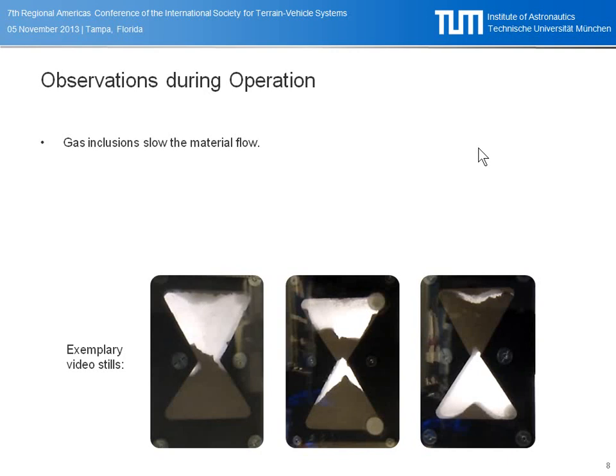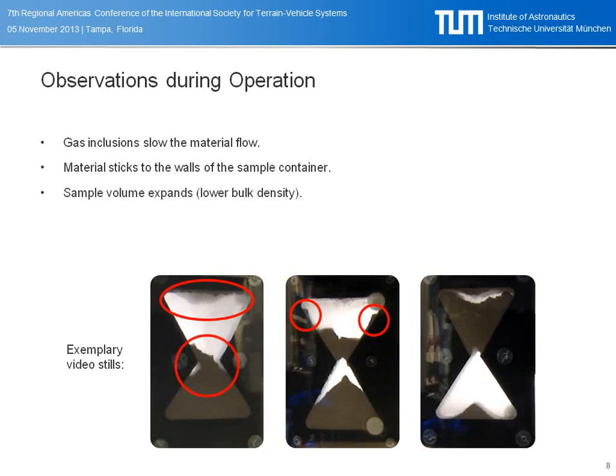Several observations we had during the flights: what we could see prior to flight in laboratory experiments was that if you don't evacuate the containers, you have gas inclusions in the porous media. These gas inclusions slow the material flow and cause blocking sometimes — that was the reason why we evacuated the containers. We also saw material sticking on the vertical and inclined walls, which may be due to electrostatic charge, residual moisture, or the cohesive forces of the material itself. The material volume also expands at lower gravity, as compaction is reduced, and we didn't anticipate this effect to be so large.